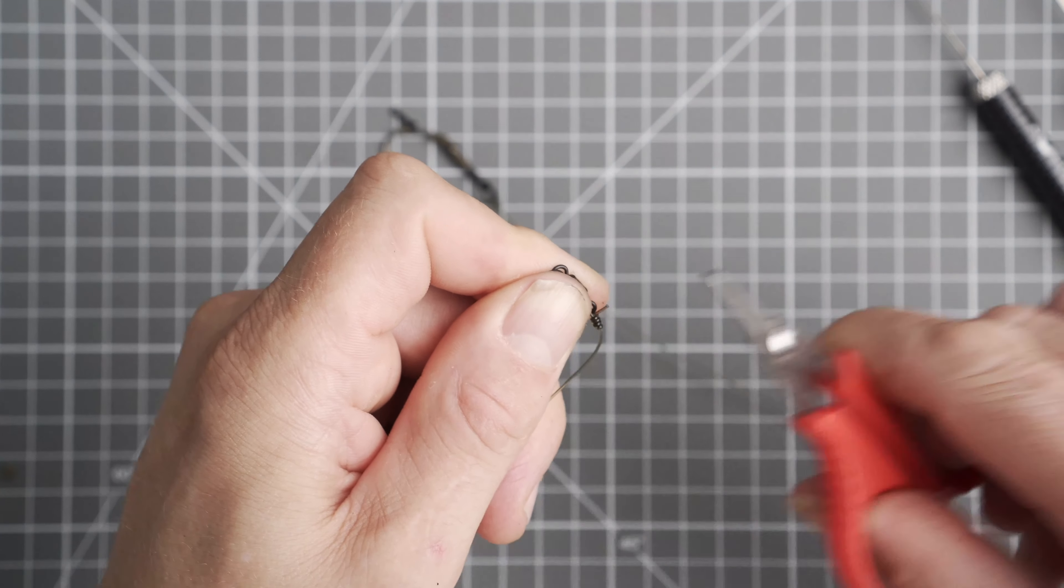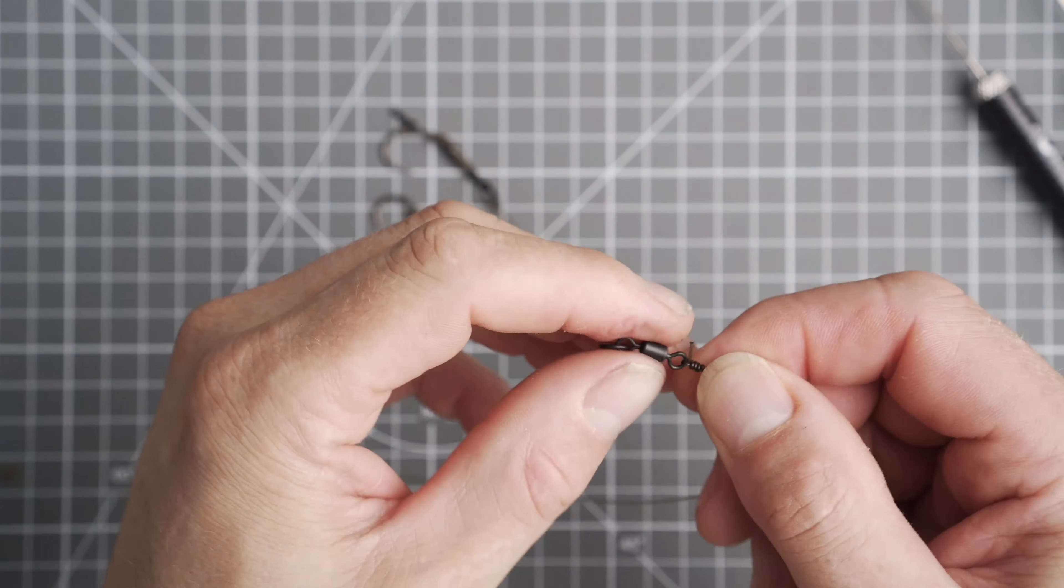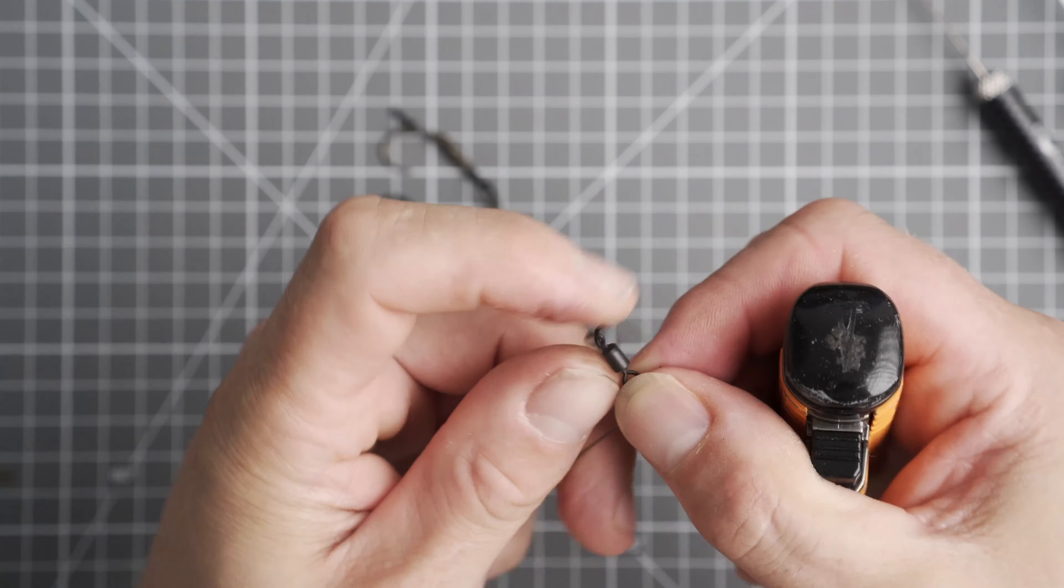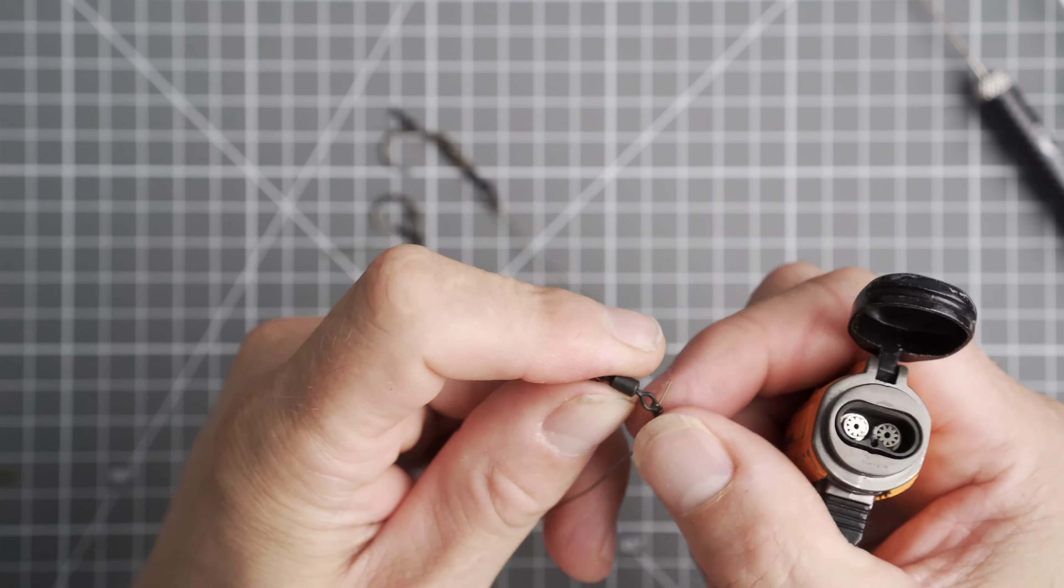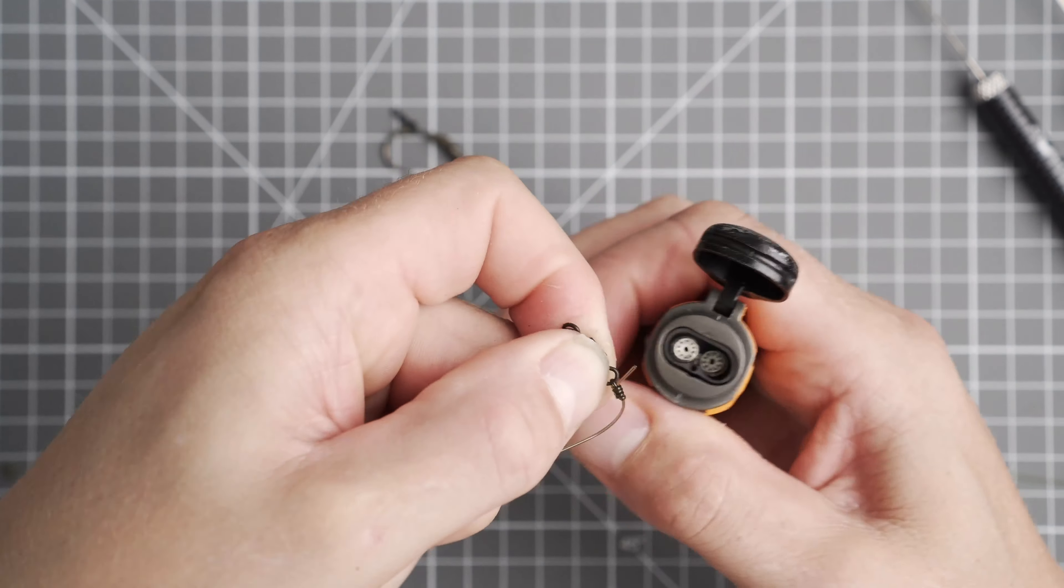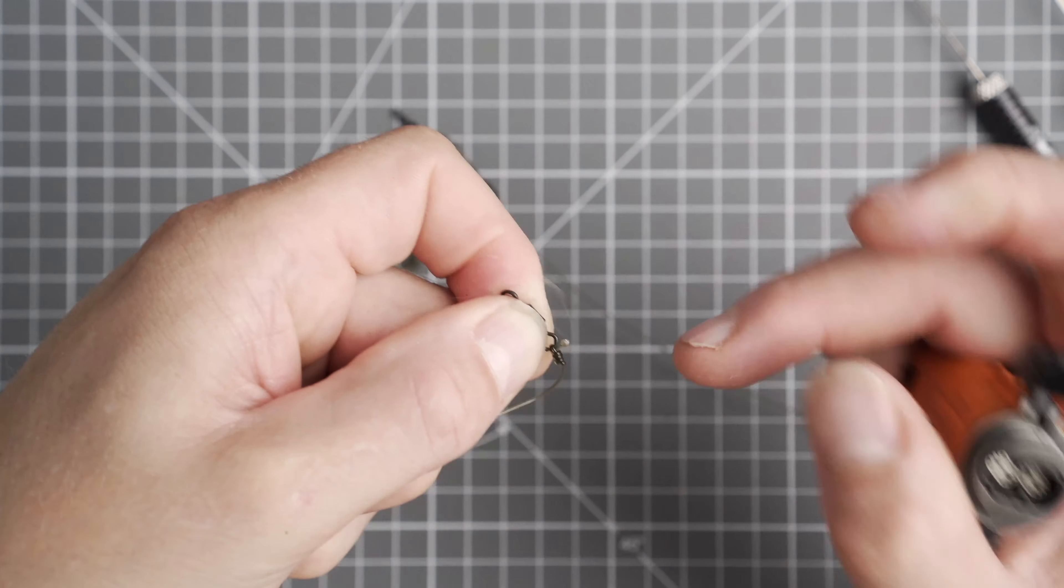And if you want to, just blob the end of that tag end with a lighter. There you go, it just neatens it all up.